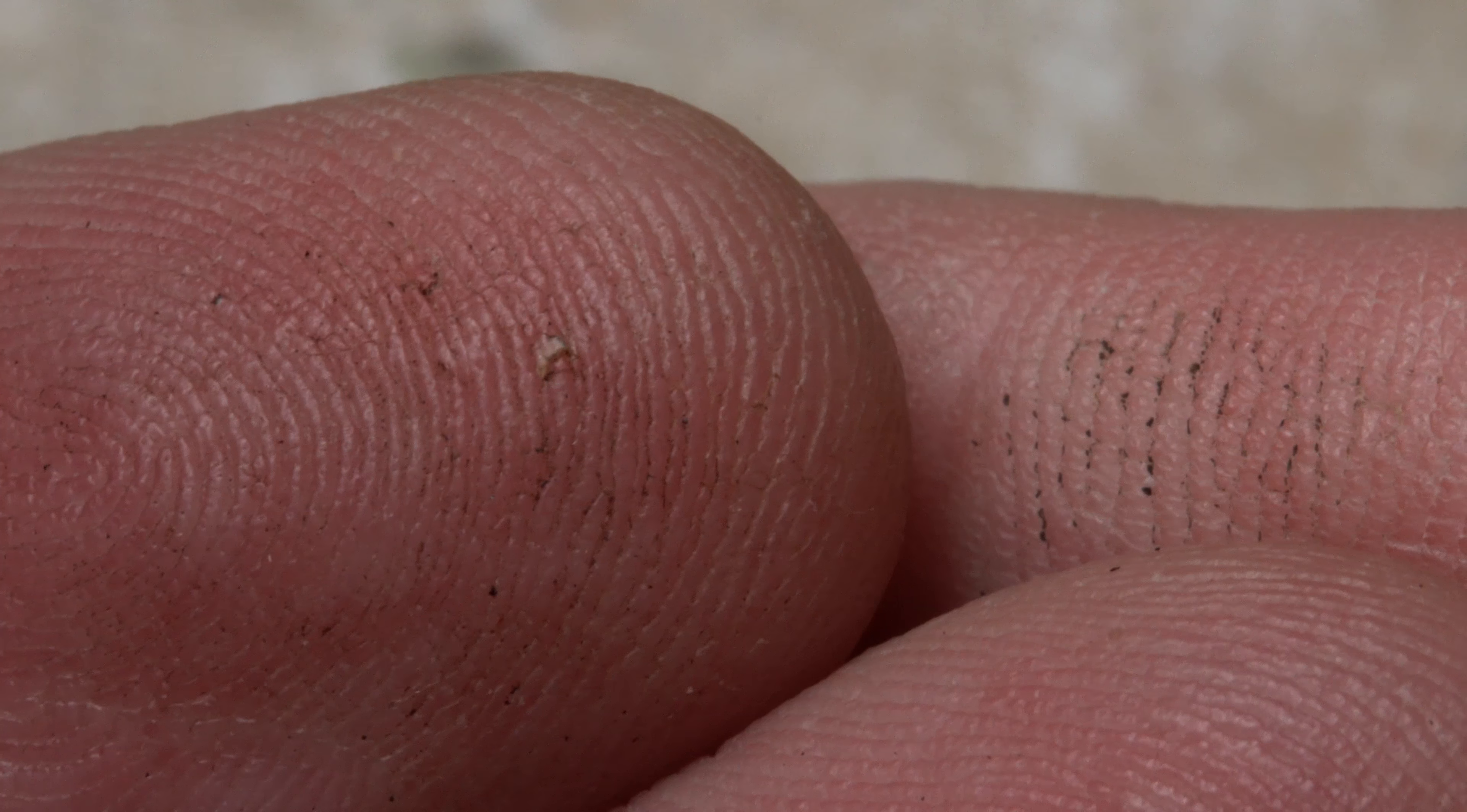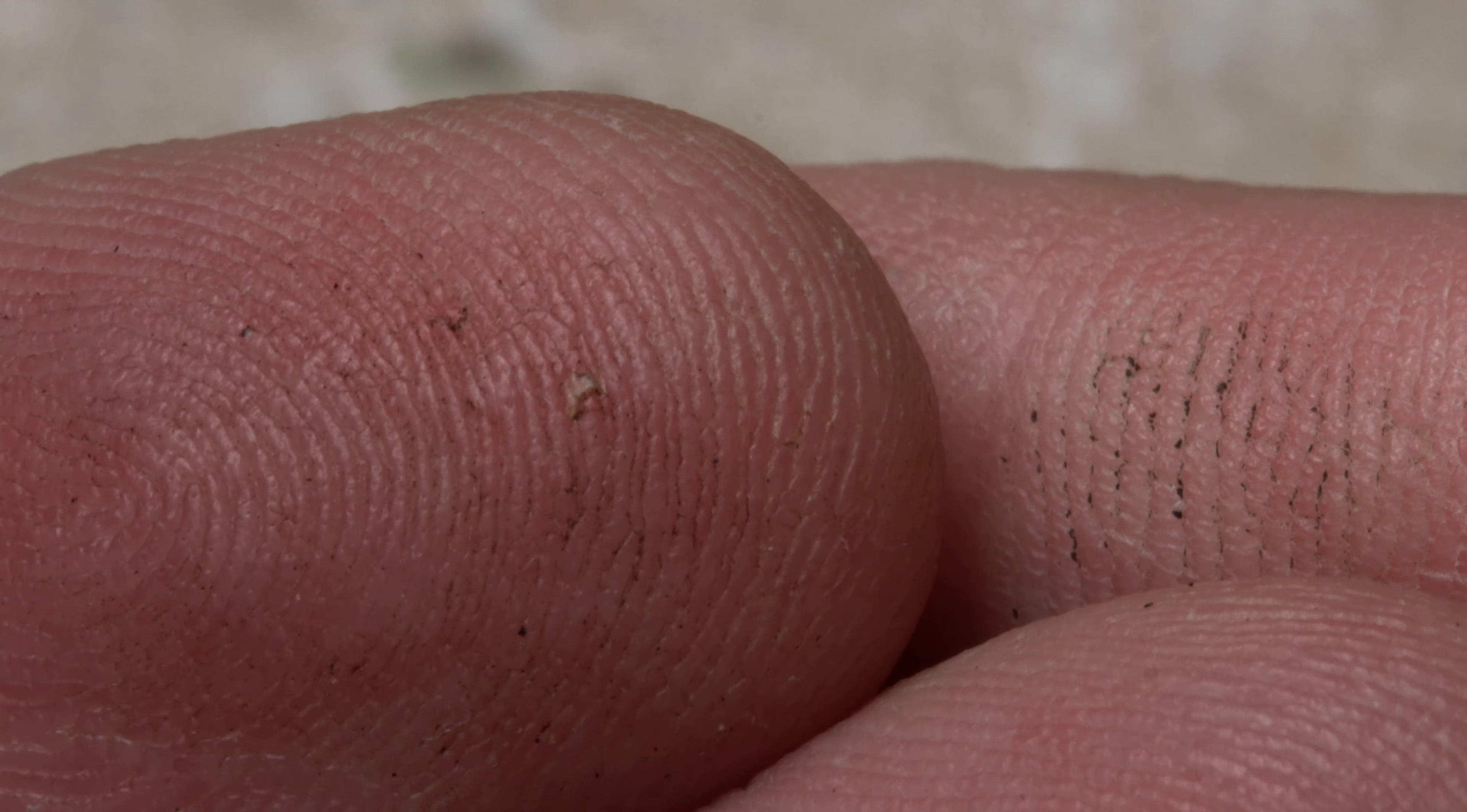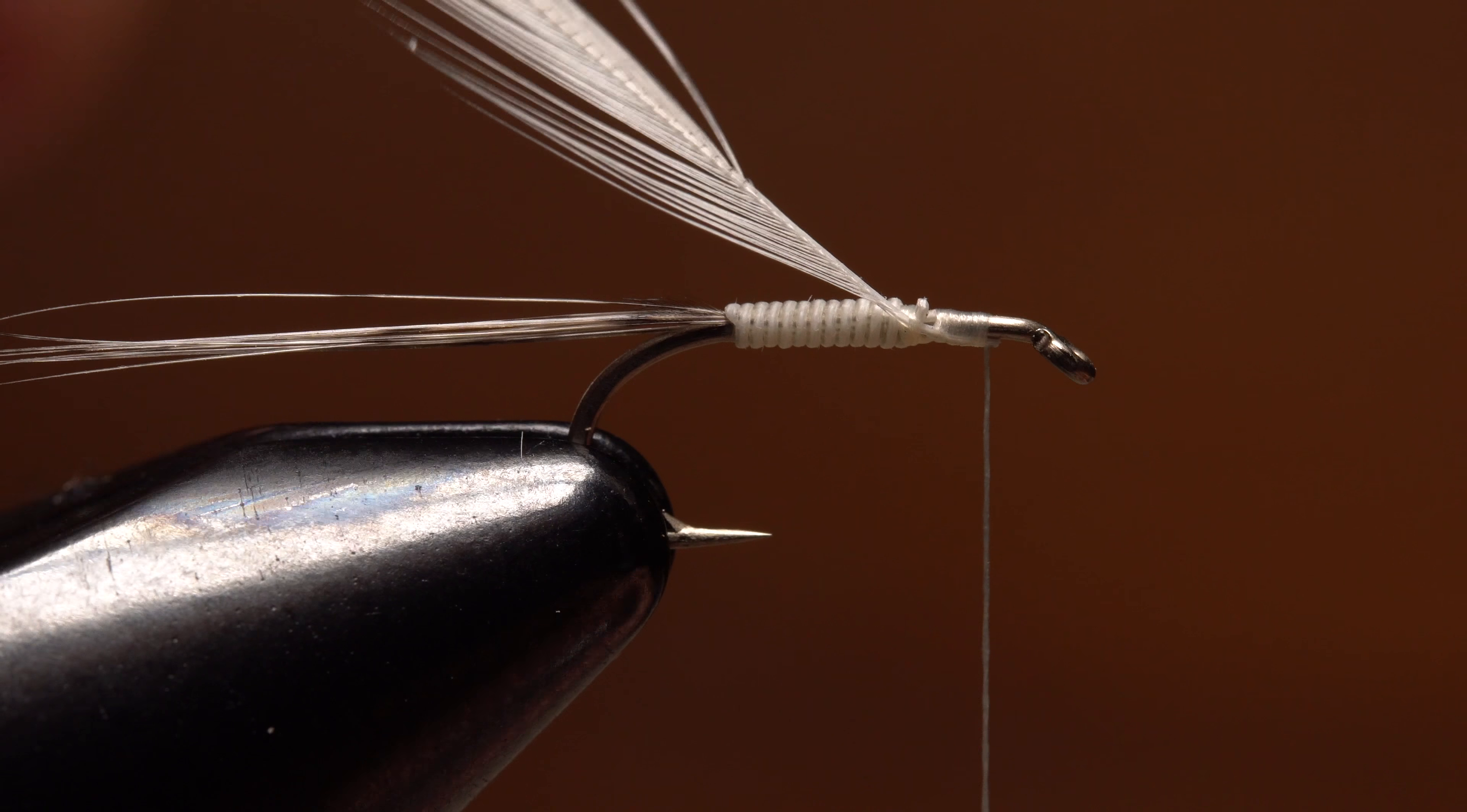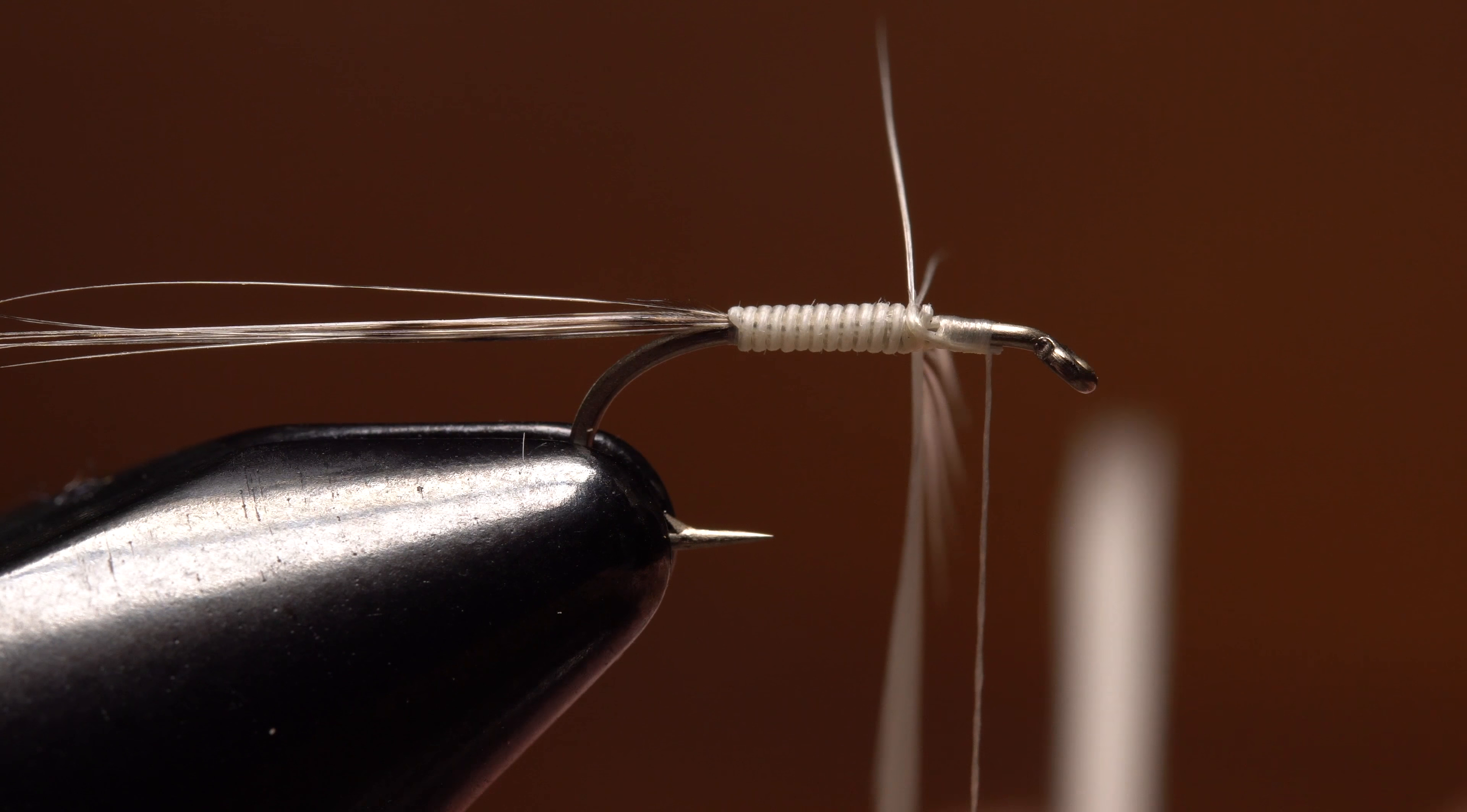Dirt and grime, along with sweat and skin oil, can greatly reduce fingertip sensitivity. This often leads to poor material tie-in, an increased number of thread wraps, and basically less than precision tying. It can also affect the color and quality of the materials and your tying thread.